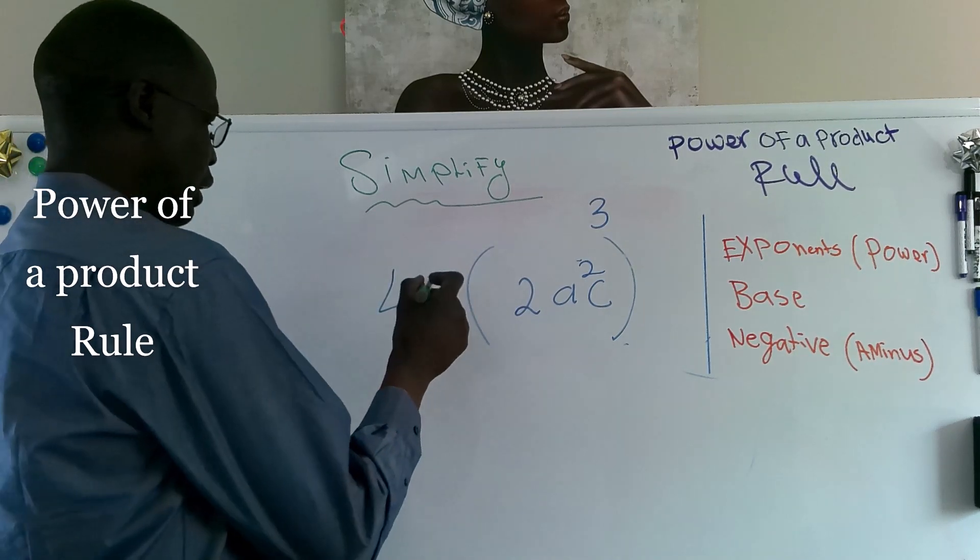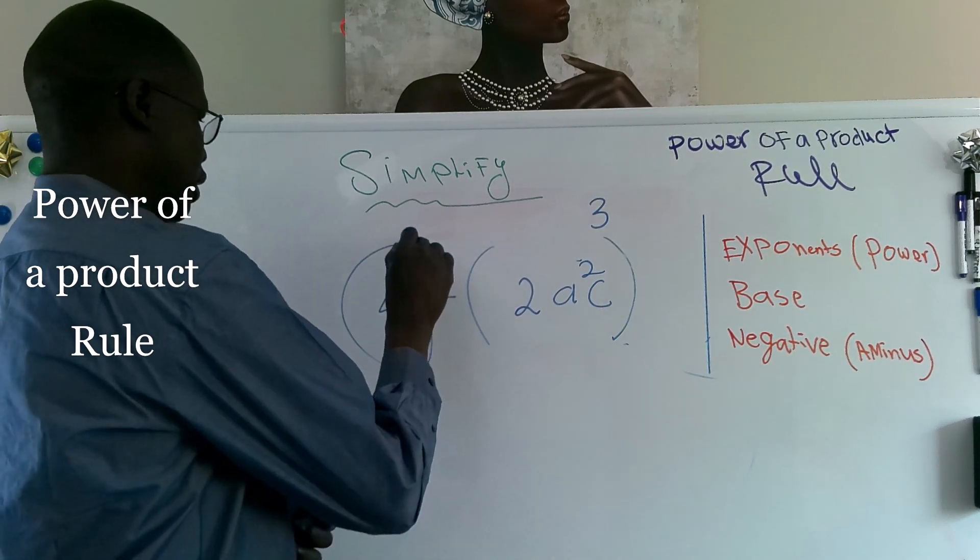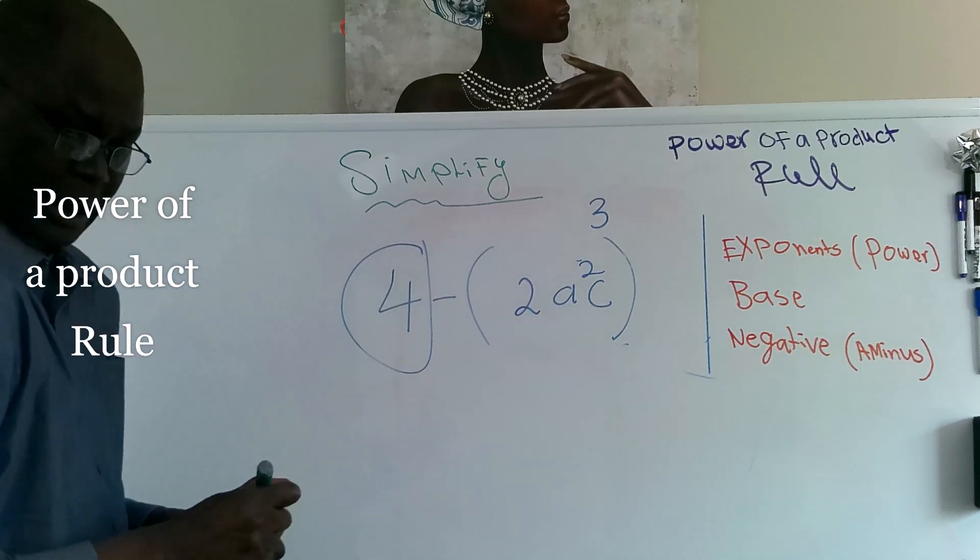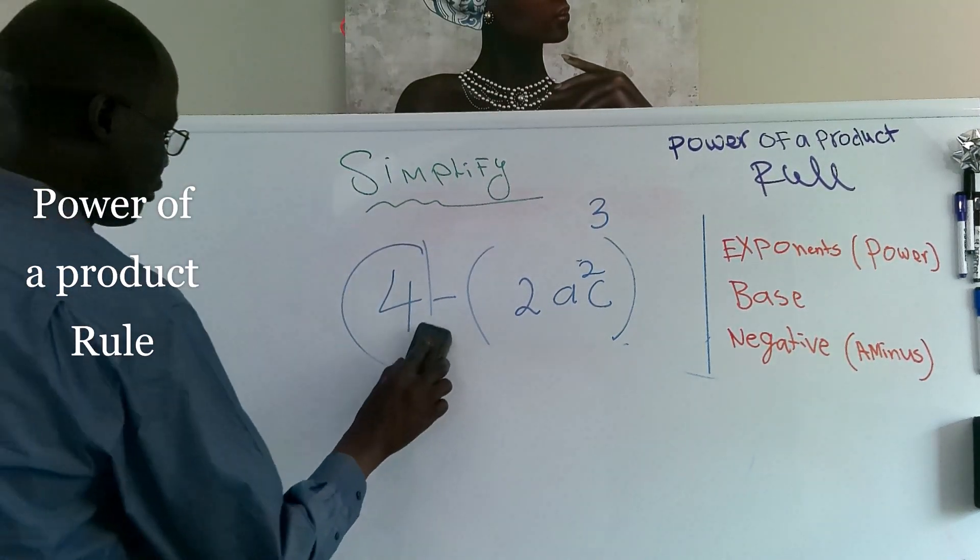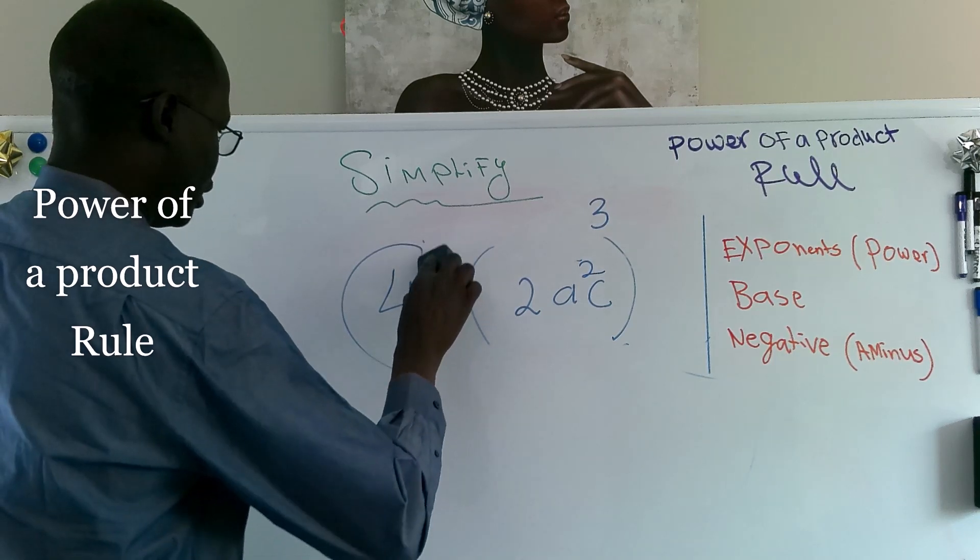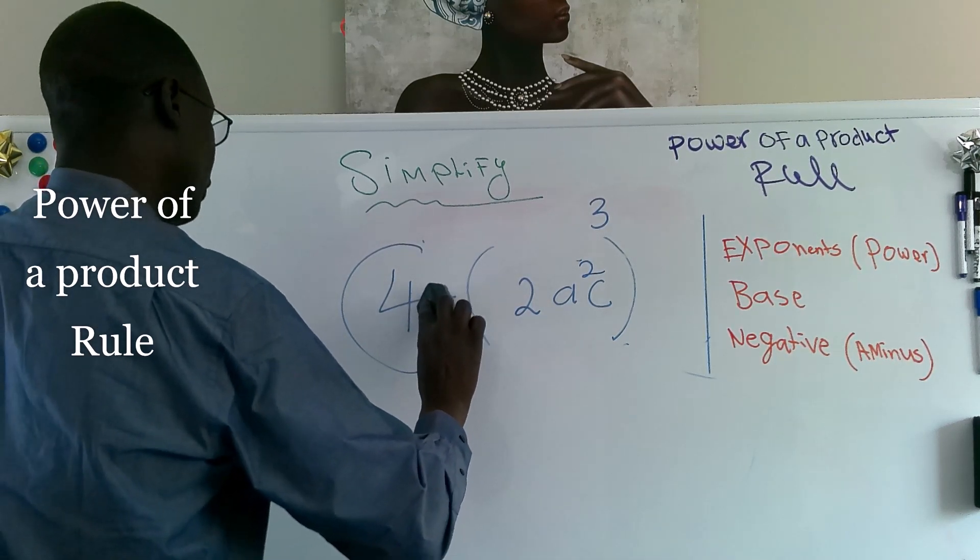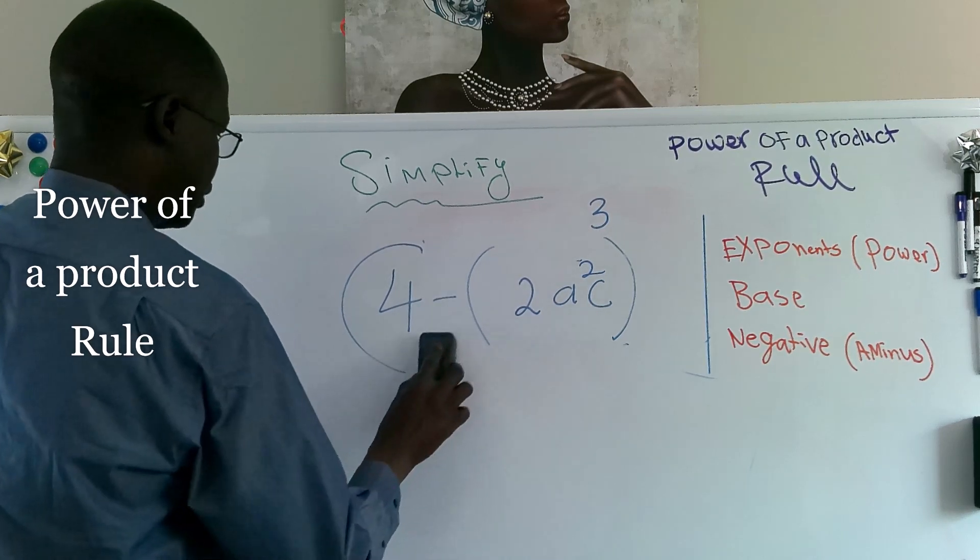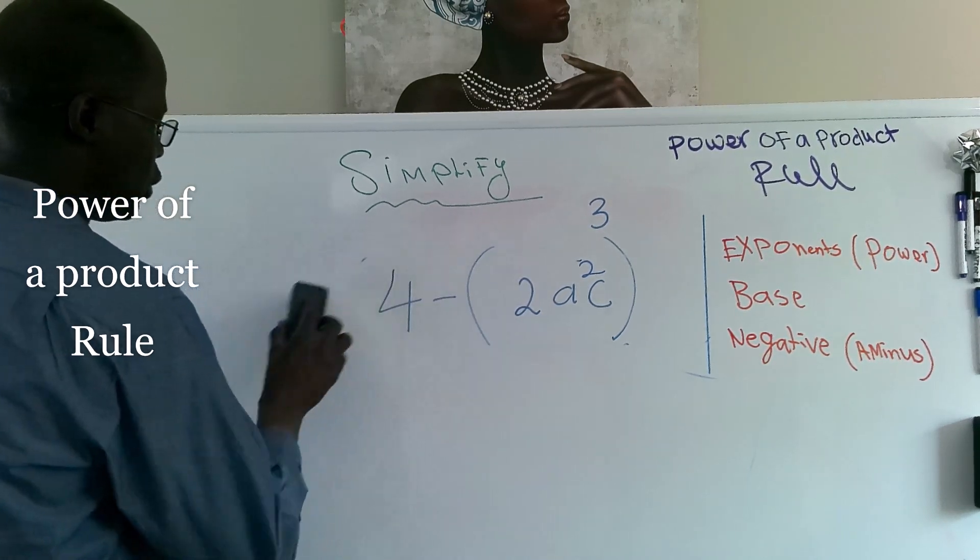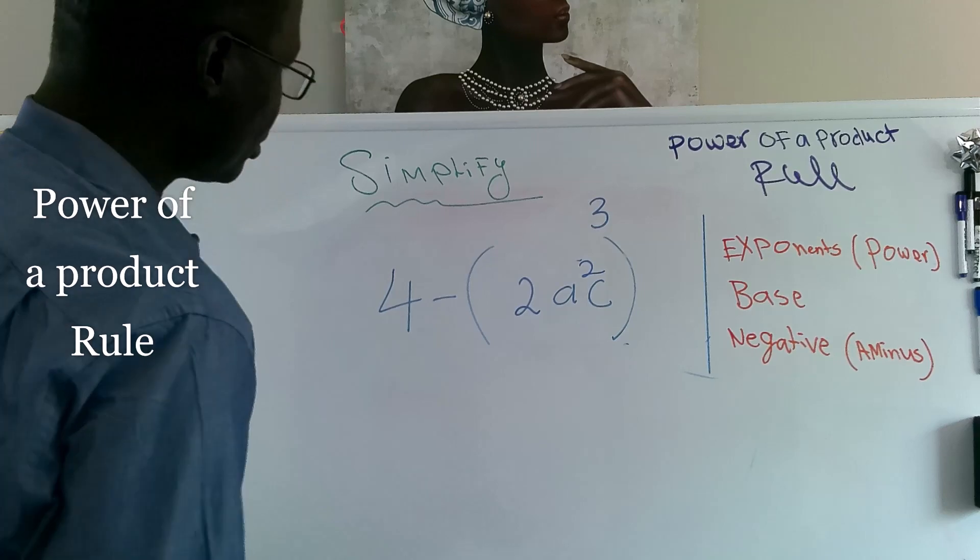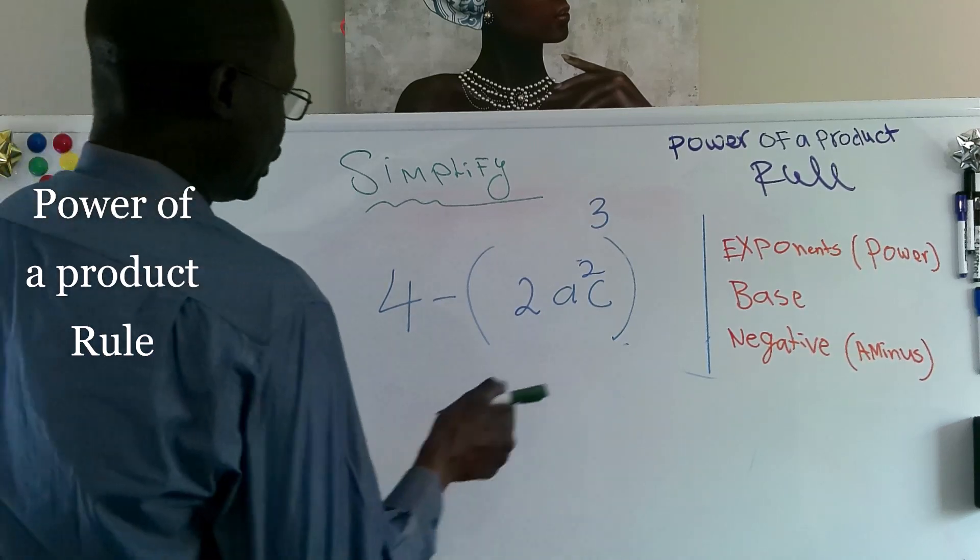And sometimes it can be confused. You can say, oh, the whole thing times the 4 times there, but not because the only thing here is a negative or a minus sign is the only thing will be times 2 and a and c. So let's see how this works.